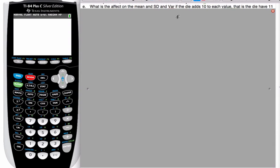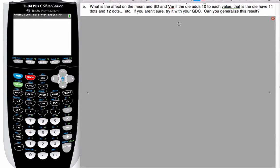Okay, so now what we're going to take a look at is the effect on the mean and standard deviation in variance if the die adds 10 to each value.